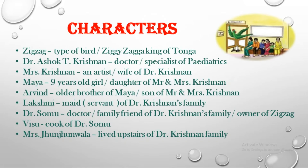Now the characters: Zigzag — it is a type of bird, and its name is Zikki Zaga, King of Doma. Next character: Dr. Ashok T. Krishnan — he was a doctor and a specialist in pediatrics. Mrs. Krishnan — she was an artist and wife of Dr. Krishnan. Maya — she was a nine-year-old girl and daughter of Mr. and Mrs. Krishnan. Arvind — the older brother of Maya and son of Mr. and Mrs. Krishnan.